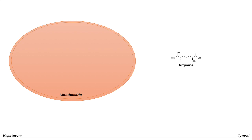To begin, the urea cycle occurs primarily in the hepatocytes of the liver. It can also occur to a minor extent in the kidney as well. The main function of the urea cycle is to rid the body of nitrogenous waste by converting ammonia and ammonium into a product that is less toxic, such as urea.